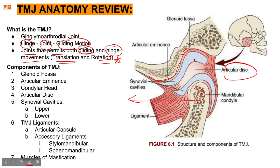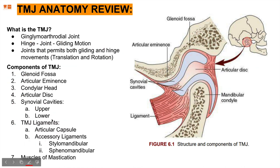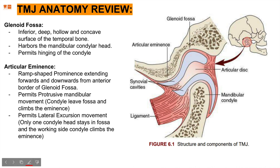TMJ ligaments include the articular capsule, which covers everything — the entire rim of the glenoid fossa, articular eminence, and condylar head. There is an articular capsule and accessory ligaments: stylomandibular and spinomandibular, two ligaments that help control the TMJ area. And of course there are the muscles of mastication. Now let's talk about each component in detail. Glenoid fossa is the inferior, deep, hollow, concave surface of the temporal bone that harbors the mandibular condylar head and permits the hinging of the condyle. So as soon as we hear glenoid fossa, we're talking about rotation only, not translation.